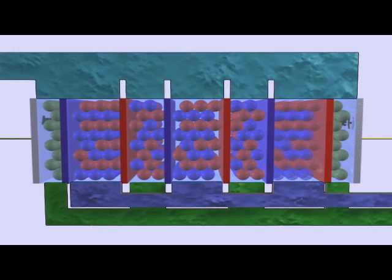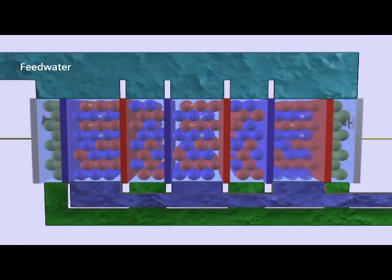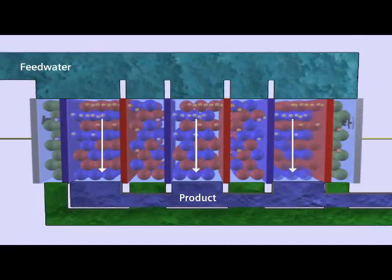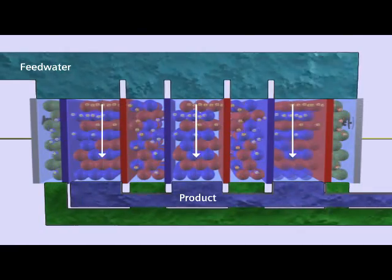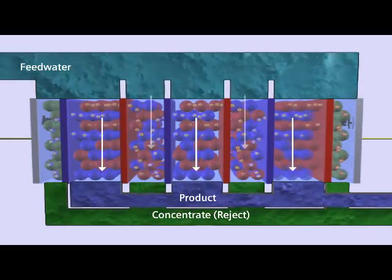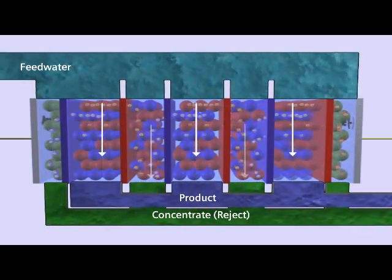As feed water is pumped into the system, it is diverted into separate compartments, mainly the concentrating compartment and the purification or dilute compartment. These water streams remain separated throughout the process because only ions can pass through the membranes.